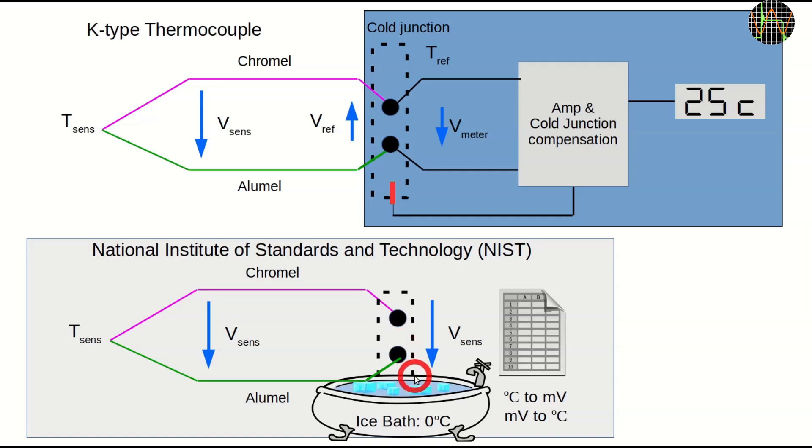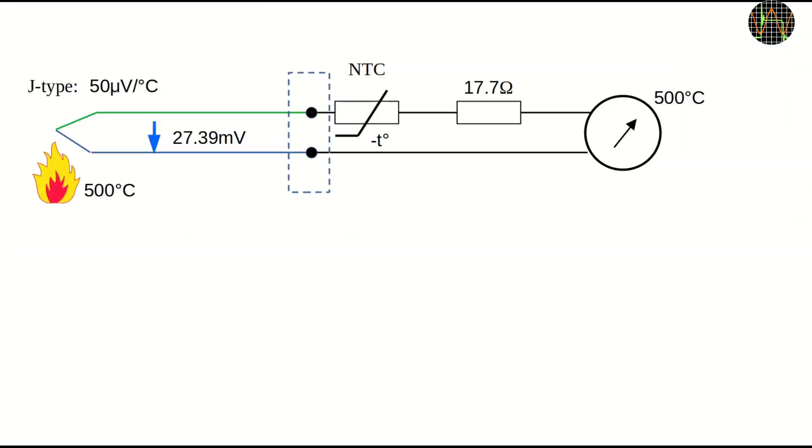Since keeping an ice bath in your meter is somewhat impractical, the workaround is to measure the actual temperature of the junction and simply correct the readings. In our case, the probe is say at 500 degrees Celsius and the instrument in the cold junction at 0 degrees Celsius.